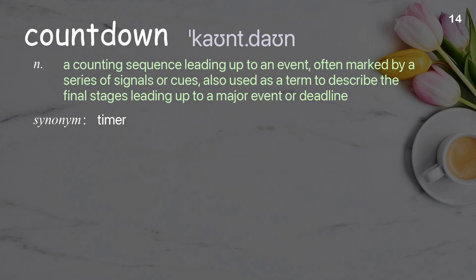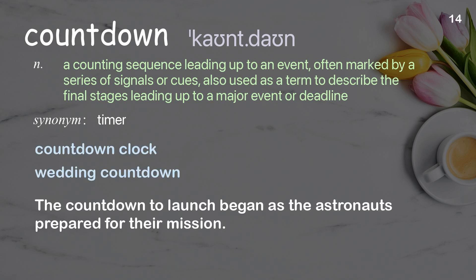Countdown: a counting sequence leading up to an event, often marked by a series of signals or cues; also used to describe the final stages leading up to a major event or deadline. Examples: countdown clock, wedding countdown. The countdown to launch began as the astronauts prepared for their mission.